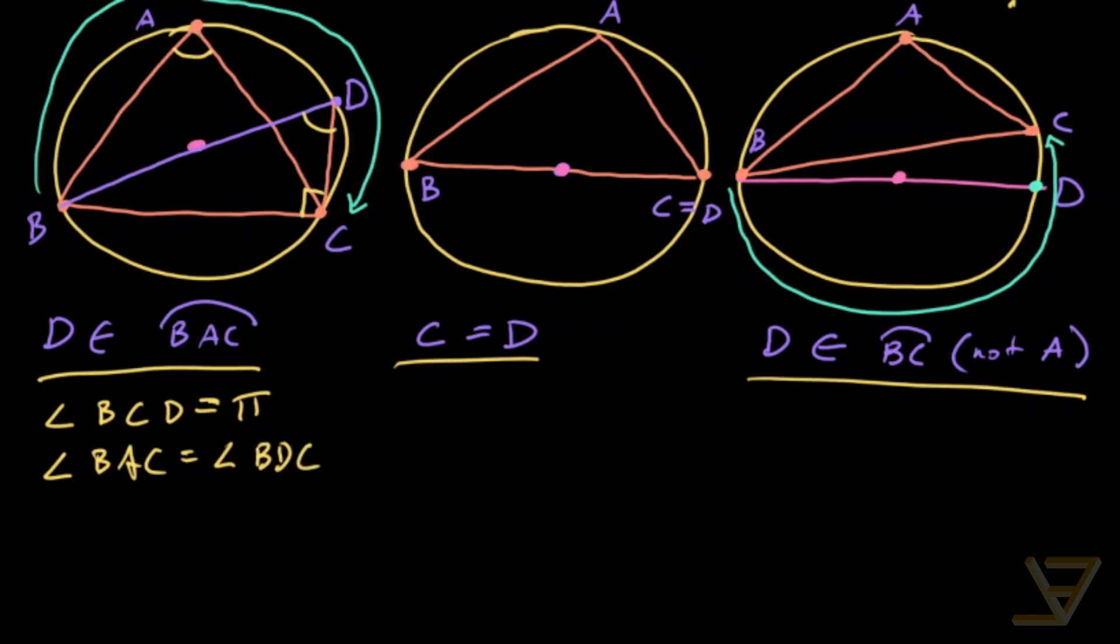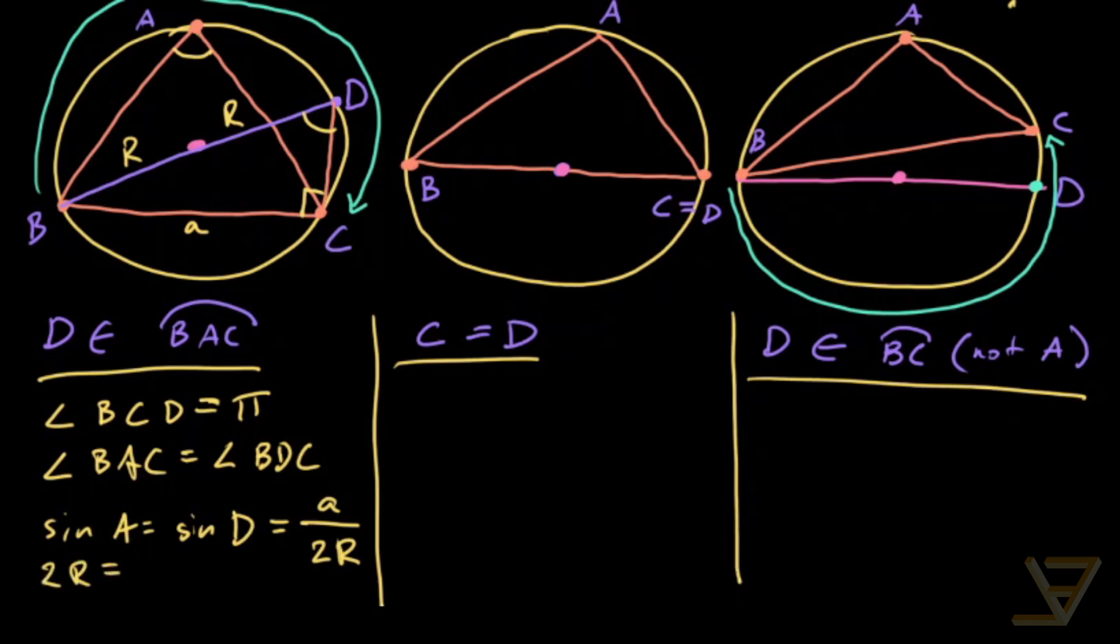So what we get is that sine of A is equal to sine of D, which is equal to, since we have a 90 degree triangle, this is the opposite A, and this over here is 2R, so it's A over 2R. So that proves the extended law of sines in that case, because it's equivalent to saying that 2R is equal to A over sine A. Now, this symmetrically follows to B over sine B and C over sine C.